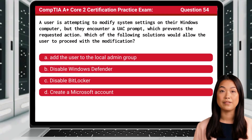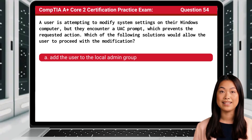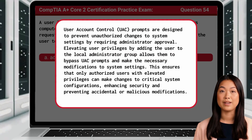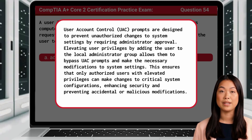Question 54: A user is attempting to modify system settings on their Windows computer but encounters a UAC prompt which prevents the requested action. Which of the following solutions would allow the user to proceed with the modification? The answer is A: add the user to the local admin group. User Account Control, or UAC, prompts are designed to prevent unauthorized changes to system settings by requiring administrator approval. Elevating user privileges by adding the user to the local administrator group allows them to bypass UAC prompts and make the necessary modifications to system settings, ensuring that only authorized users with elevated privileges can make changes to critical system configurations, enhancing security and preventing accidental or malicious modifications.